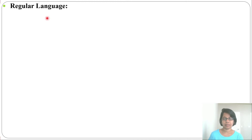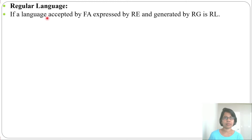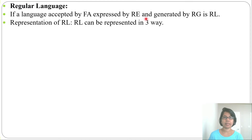Hi, let's start with regular language. If a language is accepted by a finite automaton, expressed by a regular expression, and generated by regular grammar, it is called a regular language.